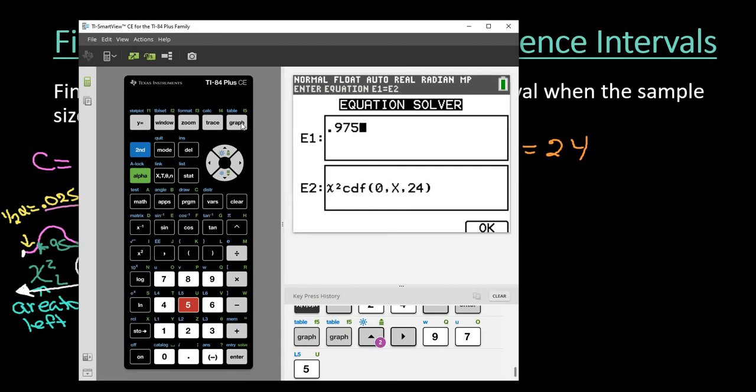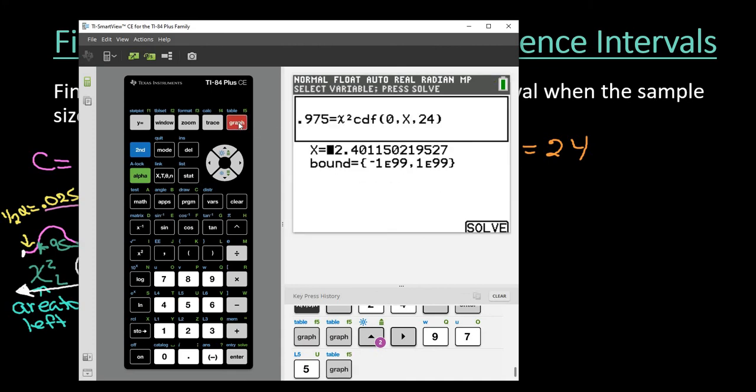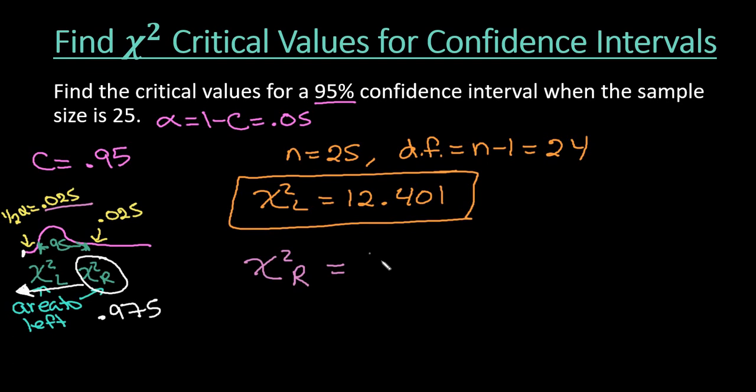So that's my area. So then I would just hit the okay again and I would hit solve again. And we can see that it's 39.364. So 39.364 would be our critical value on the right hand side.